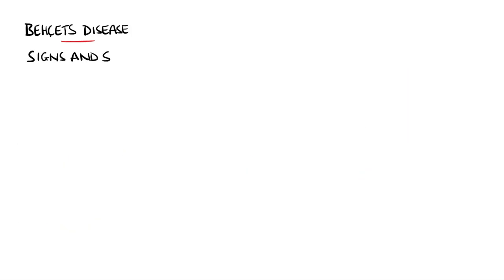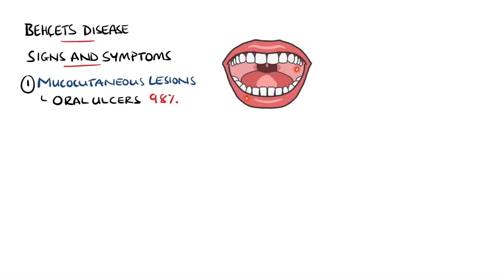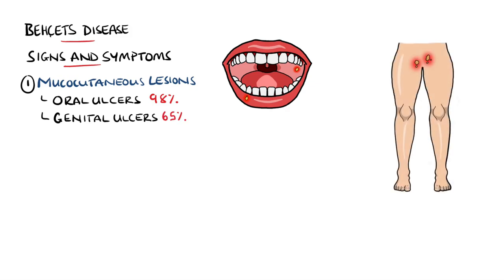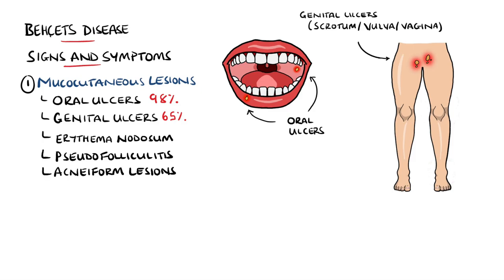Lesions of the mucous membranes and skin are the most characteristic findings of Behçet's disease. Recurrent painful oral ulcers are seen in around 98% of cases, with genital ulcers occurring in around 65% of cases. The genital ulcers are mostly seen on the scrotum in males and the vulva and vagina in females. Other cutaneous manifestations include erythema nodosum and pseudofolliculitis or acneform lesions, which appear as papules and pustules resembling acne.